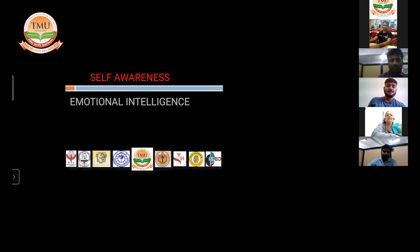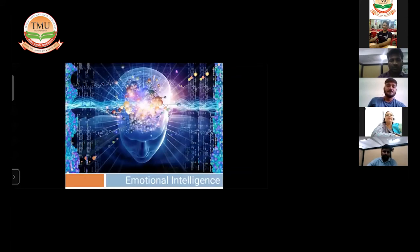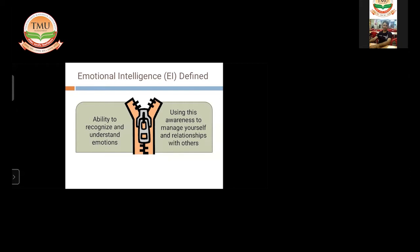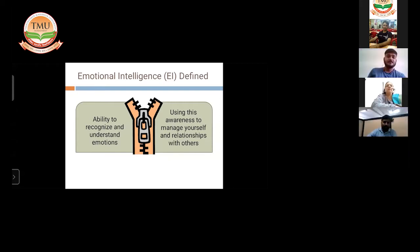So what do we understand by emotional intelligence? Emotional intelligence is basically defined as the ability to understand your emotions very well and be aware of them at the time so that you can manage your emotions.